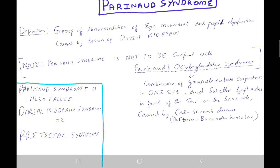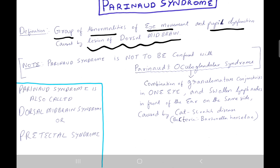Parinaud syndrome is a group of abnormalities of eye movement and pupil dysfunction caused by a lesion of the dorsal midbrain.